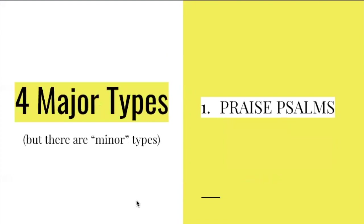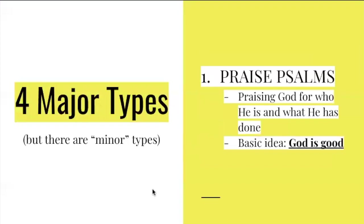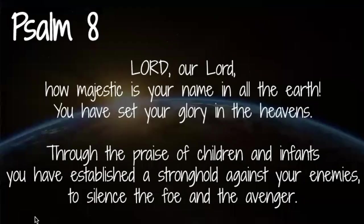Today we're just talking about four types of Psalms. There are more than just four, but we're going to talk about these four major types. So the first type is a praise Psalm. A praise Psalm is a song about praising God for who he is and what he has done. The basic idea is: God is good. We're going to look at a praise Psalm today — some of you at online VBS will recognize it. We have Psalm 8, which is the eighth song in the Book of Psalms.